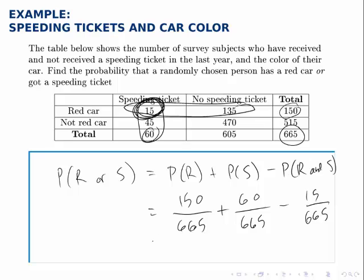Either way, we get to the answer that this probability is 195 out of 665. And if we write that as a decimal, it's approximately 0.293.